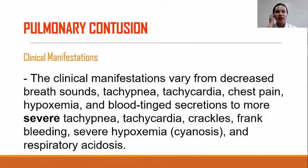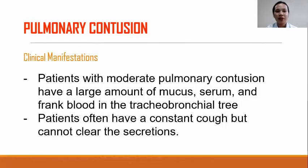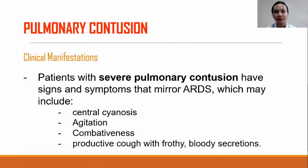Clinical manifestations vary from mild — decreased breath sounds, tachypnea, tachycardia, chest pain, hypoxemia, and blood-tinged secretions — to more severe tachypnea, tachycardia, crackles, frank bleeding, severe hypoxemia, and respiratory acidosis. Patients with moderate pulmonary contusion have a large amount of mucus, serum, and frank blood in the tracheobronchial tree, and often have a constant cough but cannot clear secretions. Patients with severe pulmonary contusion have signs and symptoms that mirror ARDS, which may include central cyanosis, agitation, combativeness, and a productive cough with frothy, blood-tinged secretions.